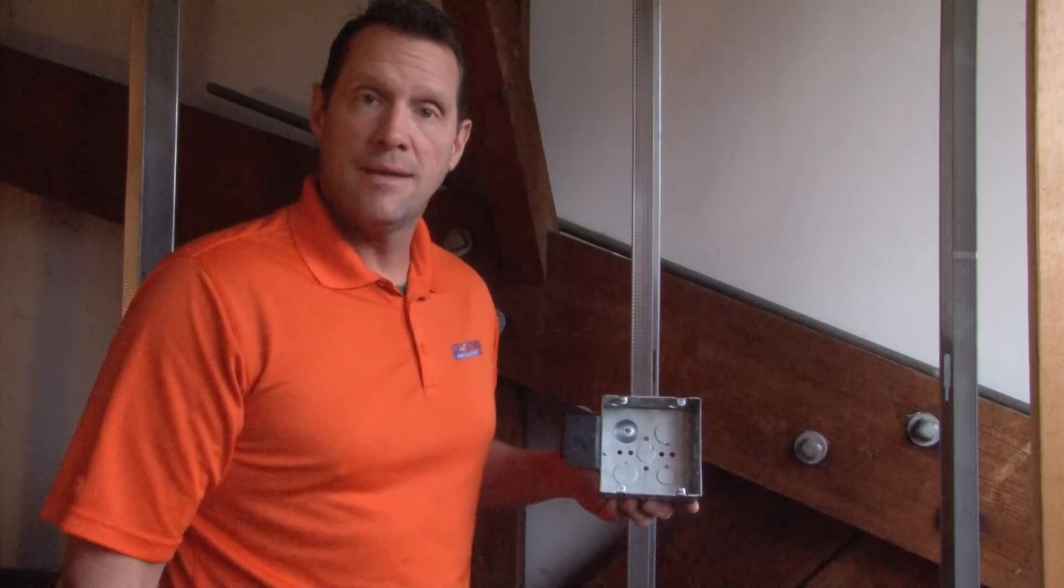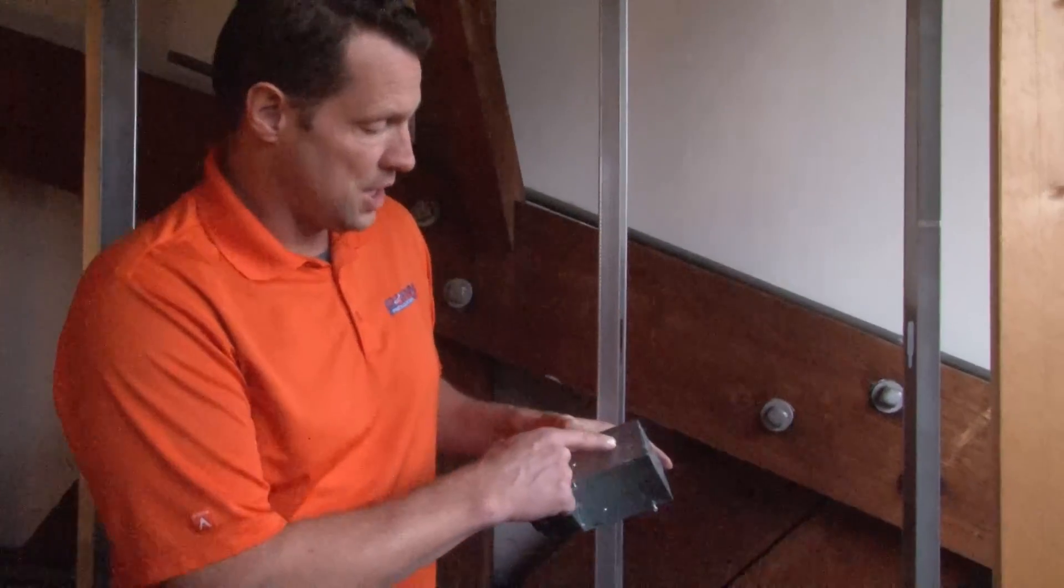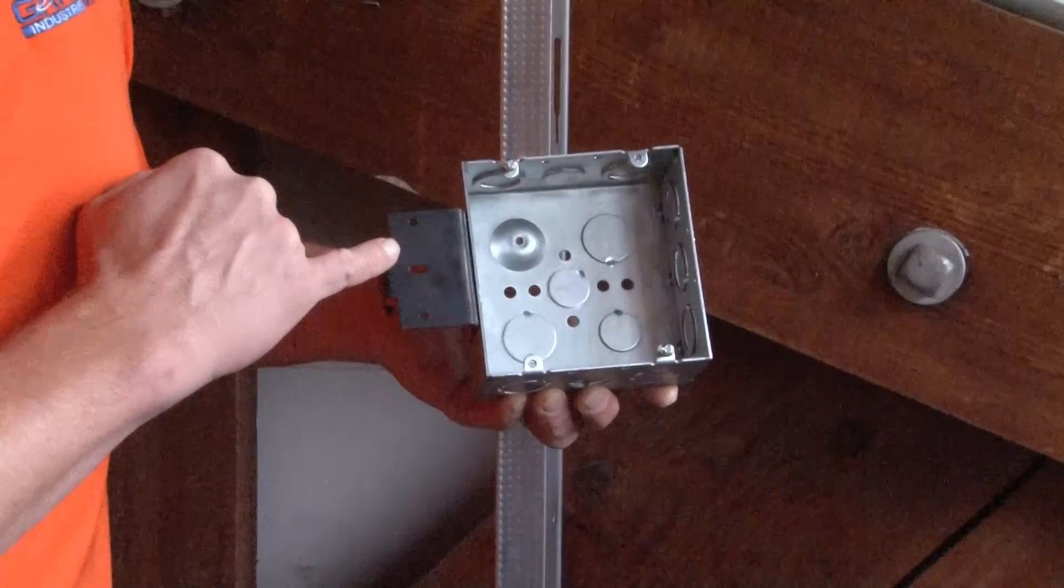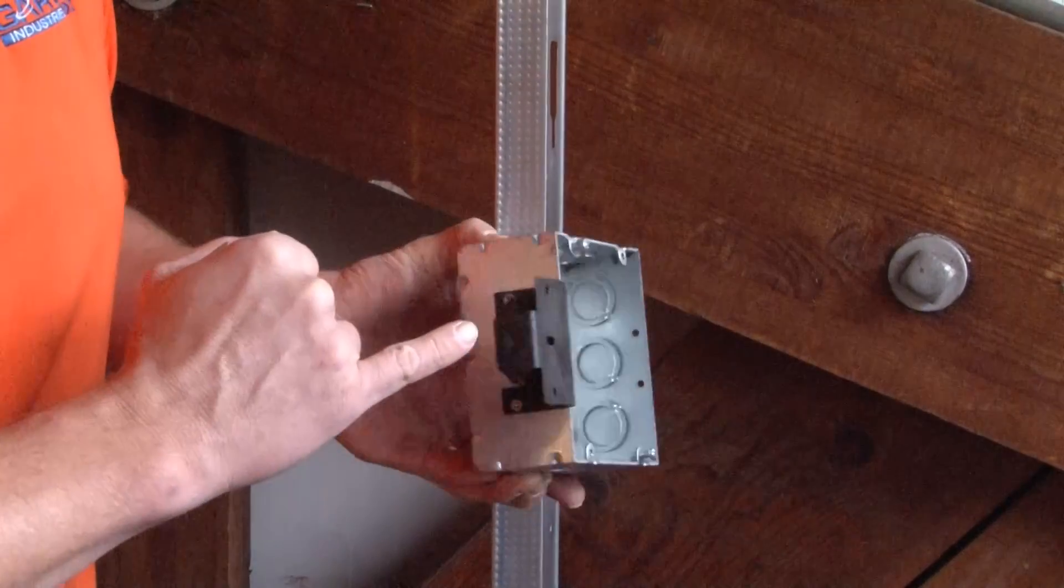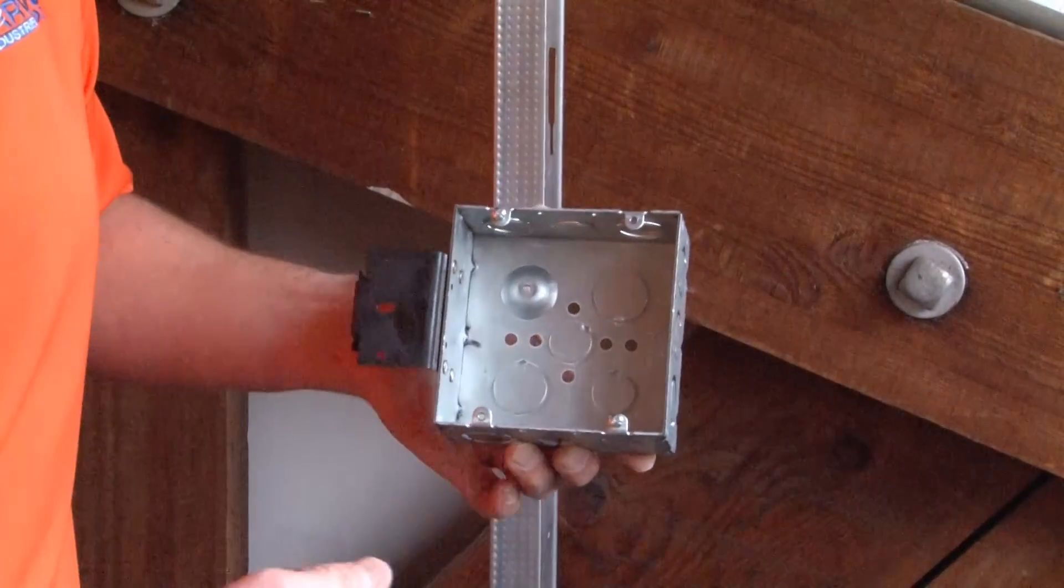Part number 72171 MSW is a 4-11/16 inch square box that has half and three-quarter inch conduit knockouts in the sides and the bottom, as well as a spring steel metal stud bracket that snaps on the face of the metal stud.